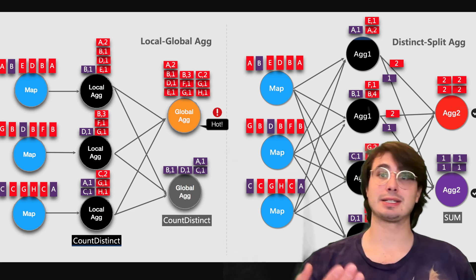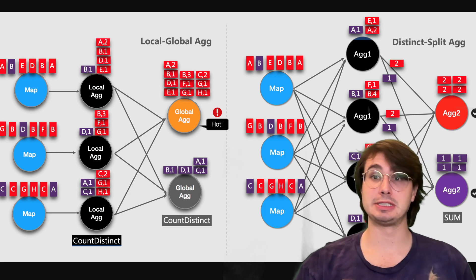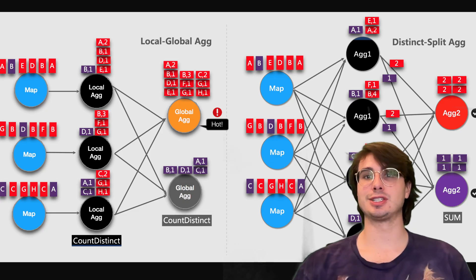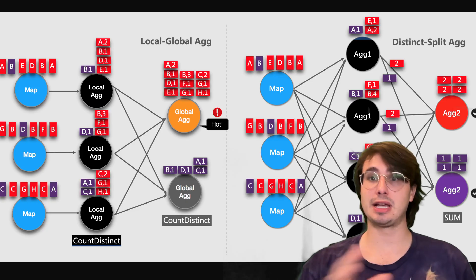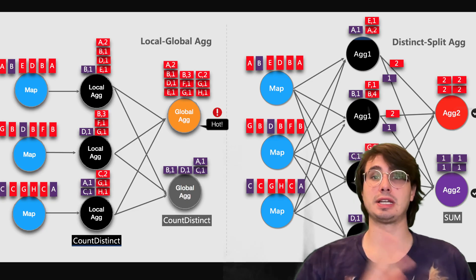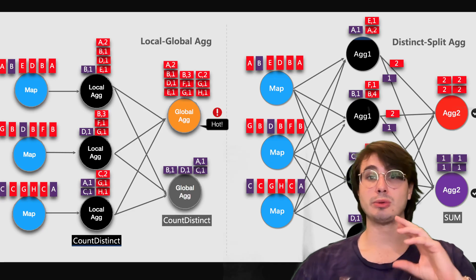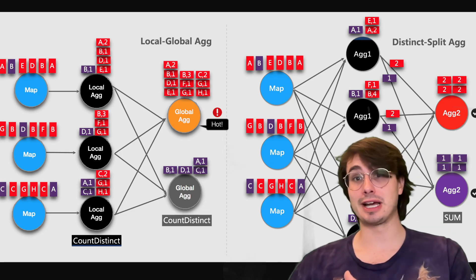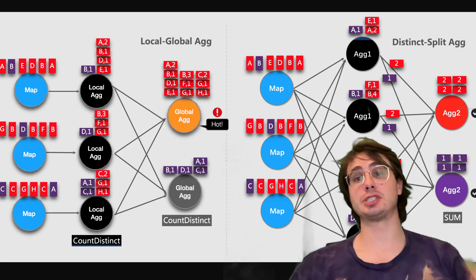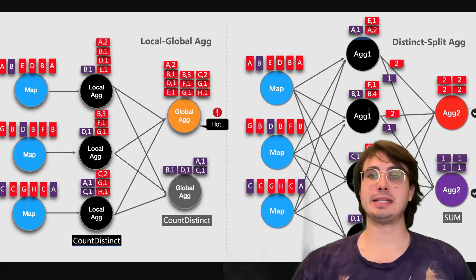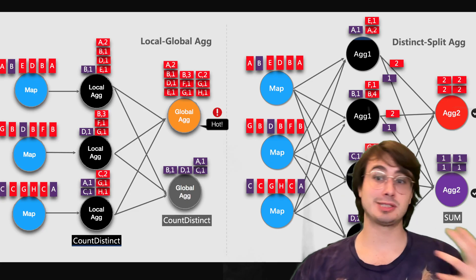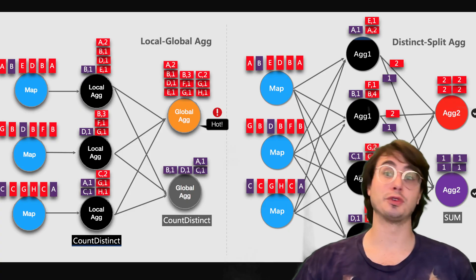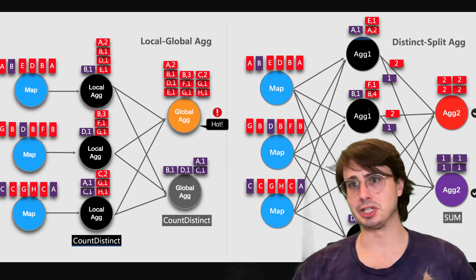Serialization overhead can also significantly impact performance, especially for applications with really high message rates. Flink's type system provides optimal serialization for POJOs and tuples, so design your data types to leverage those optimizations and your serialization overhead will go way down. For custom types, you can register them with the Kryo serializer, and consider implementing custom serializers for frequently used types to further reduce serialization overhead.